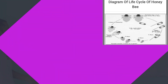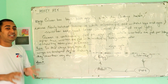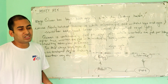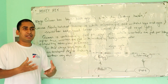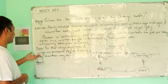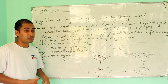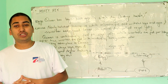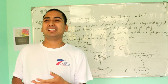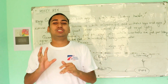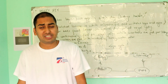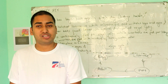Then comes the pupa stage. The legs, eyes, and wings are developed during the pupa stage — this is where metamorphosis occurs. After maturation, the adult emerges.